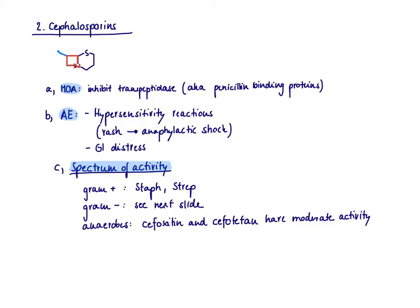In terms of the spectrum of activity, we can group the cephalosporins based on their generation to have an idea what they really cover. Generally, they are pretty good against gram-positives, including staph and strep. Gram-negatives I will discuss in the second slide. And in terms of anaerobes, there are two cephalosporins from the second generation that have moderate activity, which are cefoxetan and cefotetan.